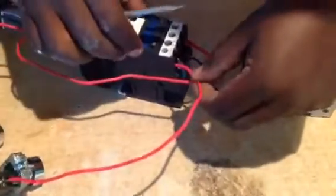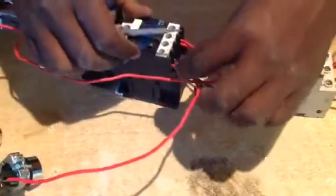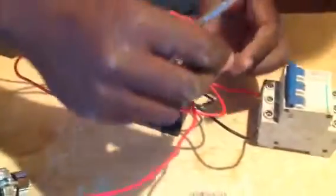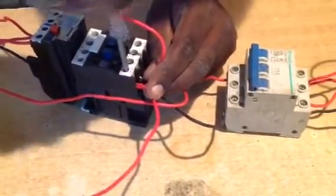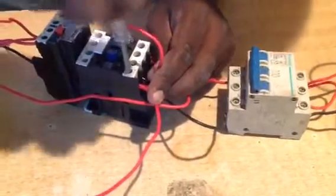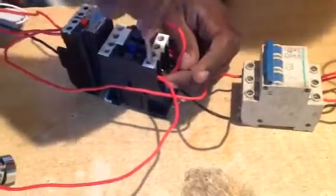But before you tighten it again, you loop from number 13 up here, and then it will supply to the coil. The coil is down here. You can see a screw down there, the coil is down here. So this is not yet self-holding.